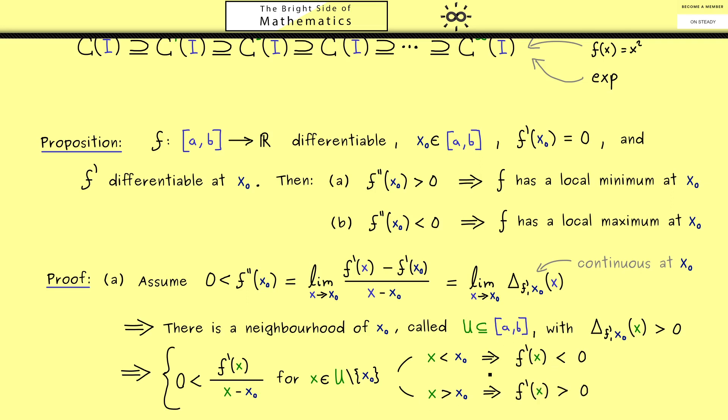So you see we got some important information about f' and this one we can use to get information for the original function f. Namely you should recall the sign of the derivative says something about the monotonicity of the function f. In short a negative sign implies that f is decreasing and a positive sign implies that f is increasing.